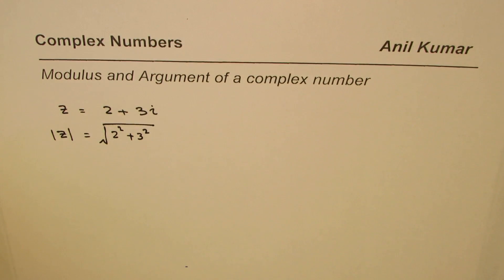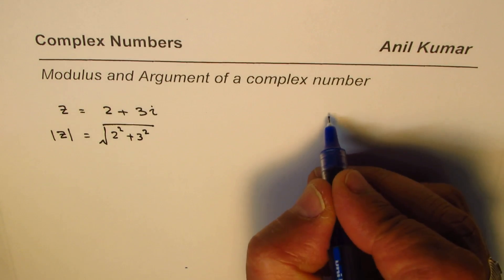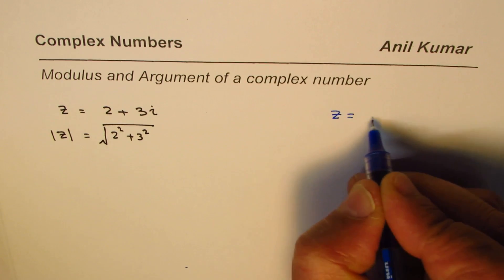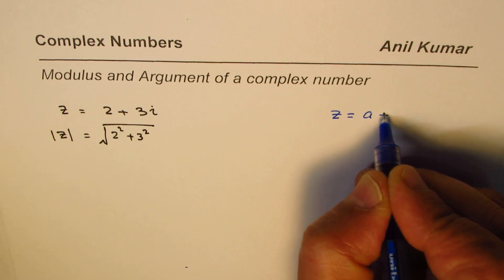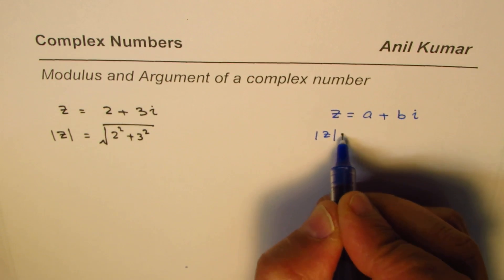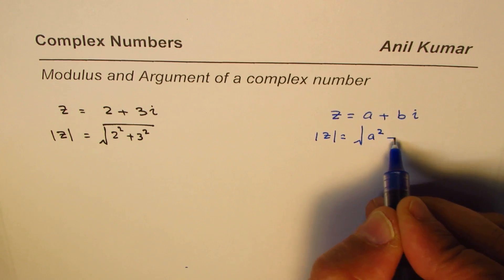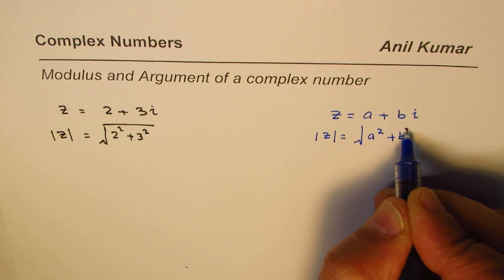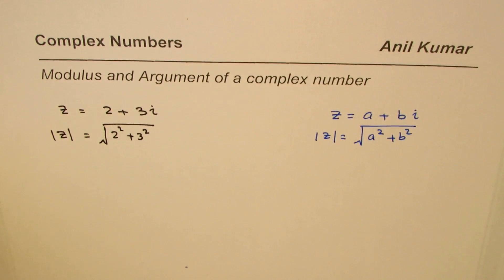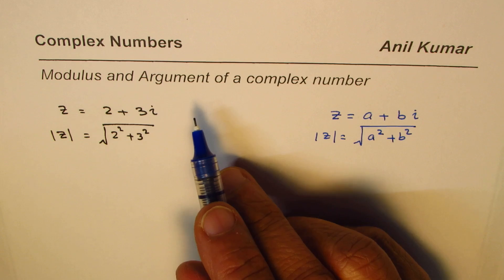Let me begin with a general example. If we have generally a vector z equals a plus bi, then the modulus of this vector will be the square root of a squared plus b squared — that is the magnitude, and that is the modulus.